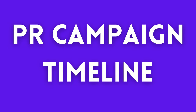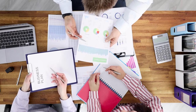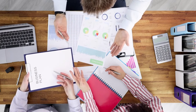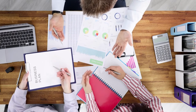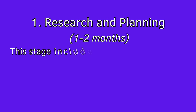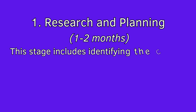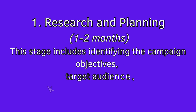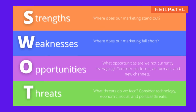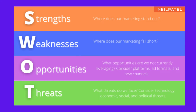Now onto the general timeline of a PR campaign. The timeline can vary significantly depending on the complexity and scope of the campaign. However, a typical one might look something like this. Stage 1: Research and Planning, in the first 1-2 months. This stage includes deciding the campaign objectives, the target audience, key messages, and strategies. It may also involve market research or a SWOT analysis.